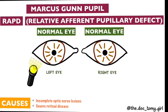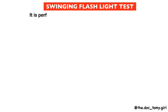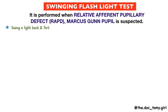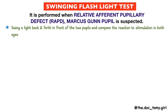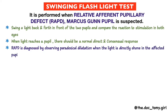Marcus Gunn pupil is the paradoxical response of a pupil to light in the presence of RAPD — the relative afferent pupillary defect. The diagnostic test is the swinging flashlight test, performed when RAPD or Marcus Gunn pupil is suspected. In this test, we swing a light back and forth in front of the two pupils and compare the reaction to stimulation in both eyes. When light reaches a pupil, there should be a normal direct and consensual response. RAPD is diagnosed by observing paradoxical dilatation when the light is directly shown in the affected pupil after being shown in the healthy pupil.